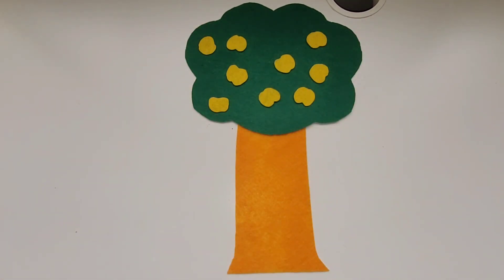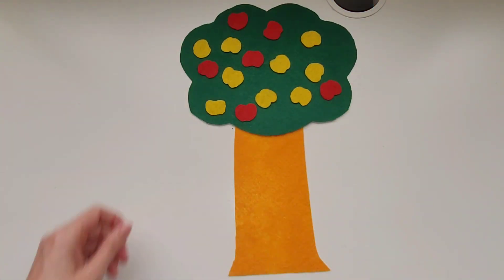After I cut out some yellow apples I'm going to get some red felt. This time I'm going to trace and cut out some red apples.